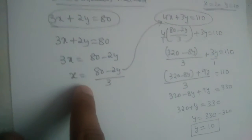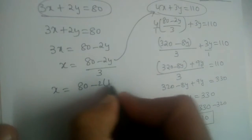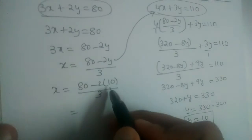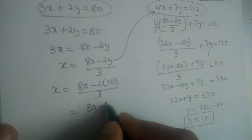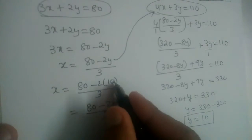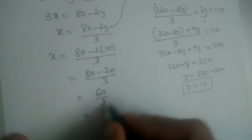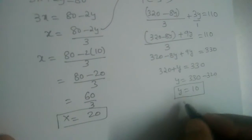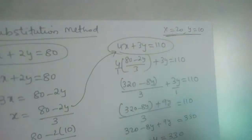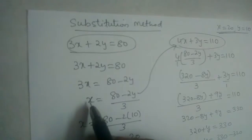Let us substitute y = 10 into x = (80 − 2y) / 3. So x = (80 − 2×10) / 3 = (80 − 20) / 3 = 60 / 3 = 20. The value of x is 20 and y is 10 — the same answer as the previous video. So we found the value of x in terms of y and substituted it into the other equation.